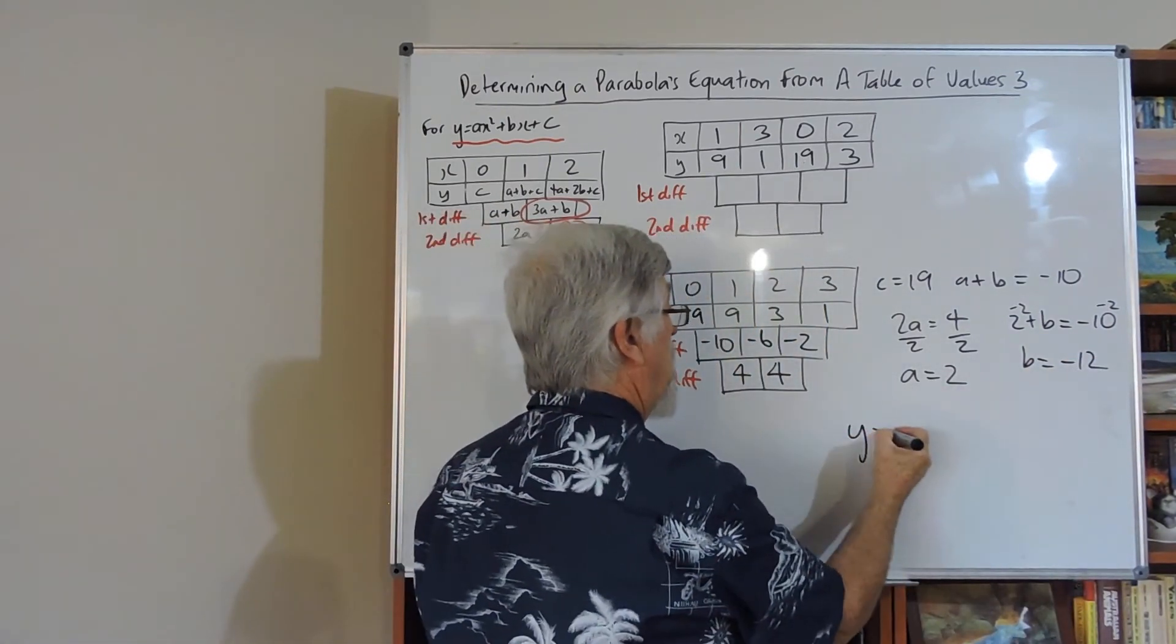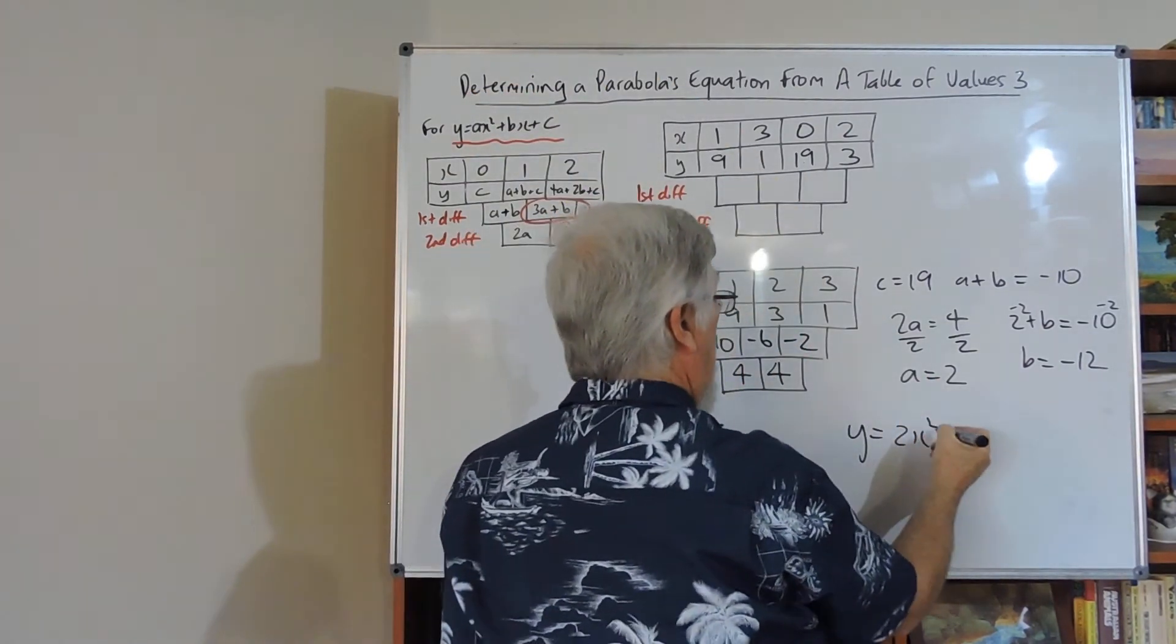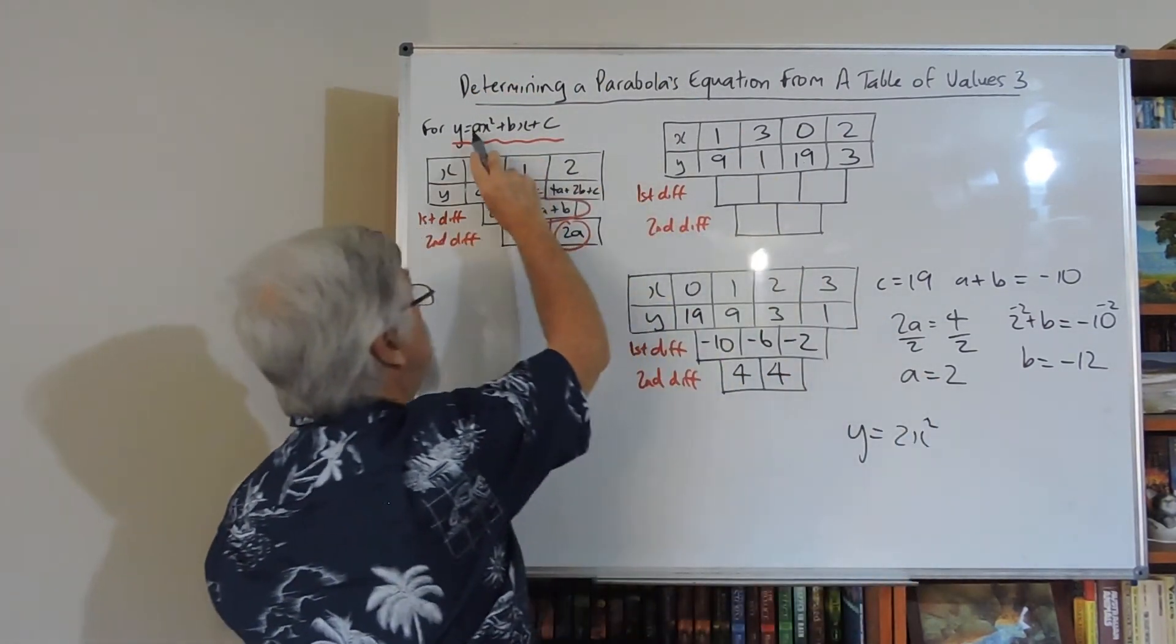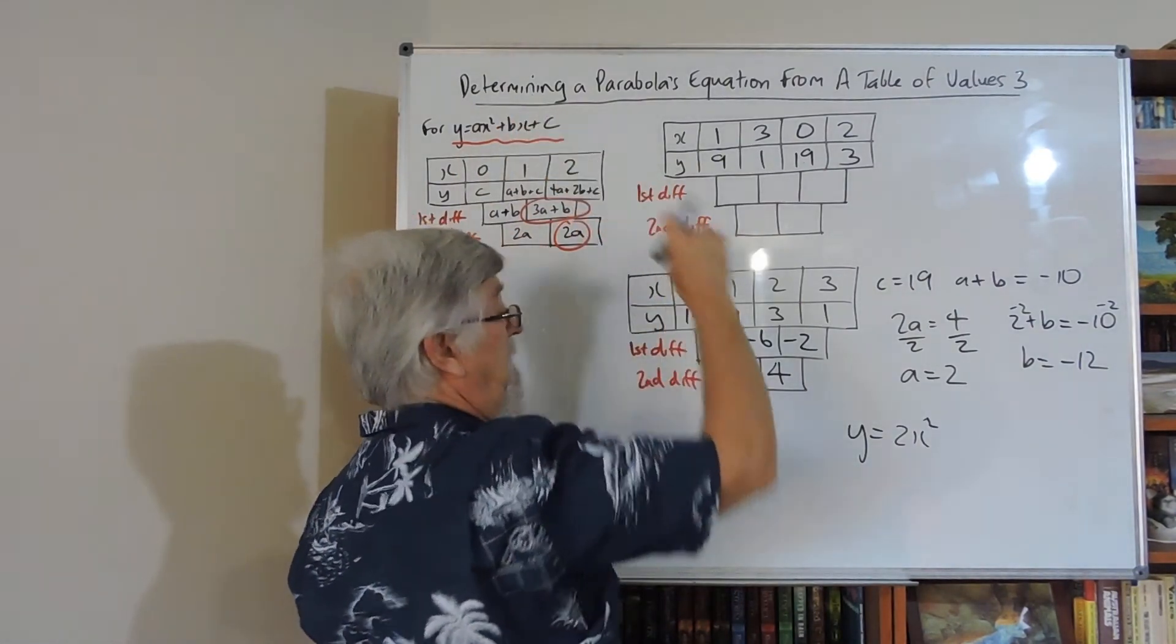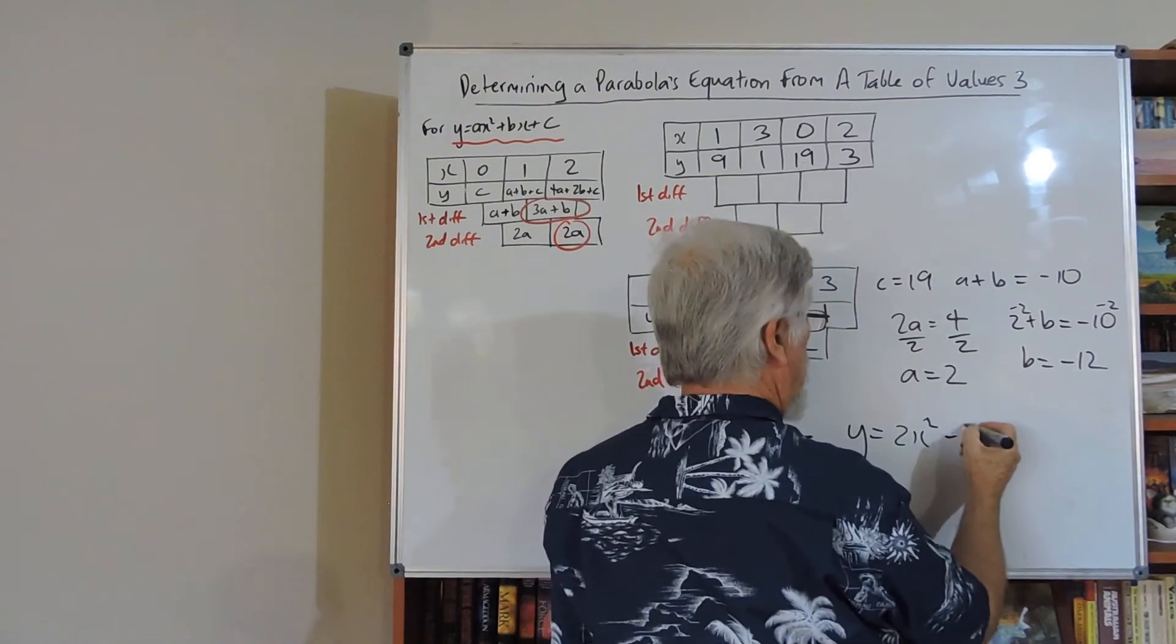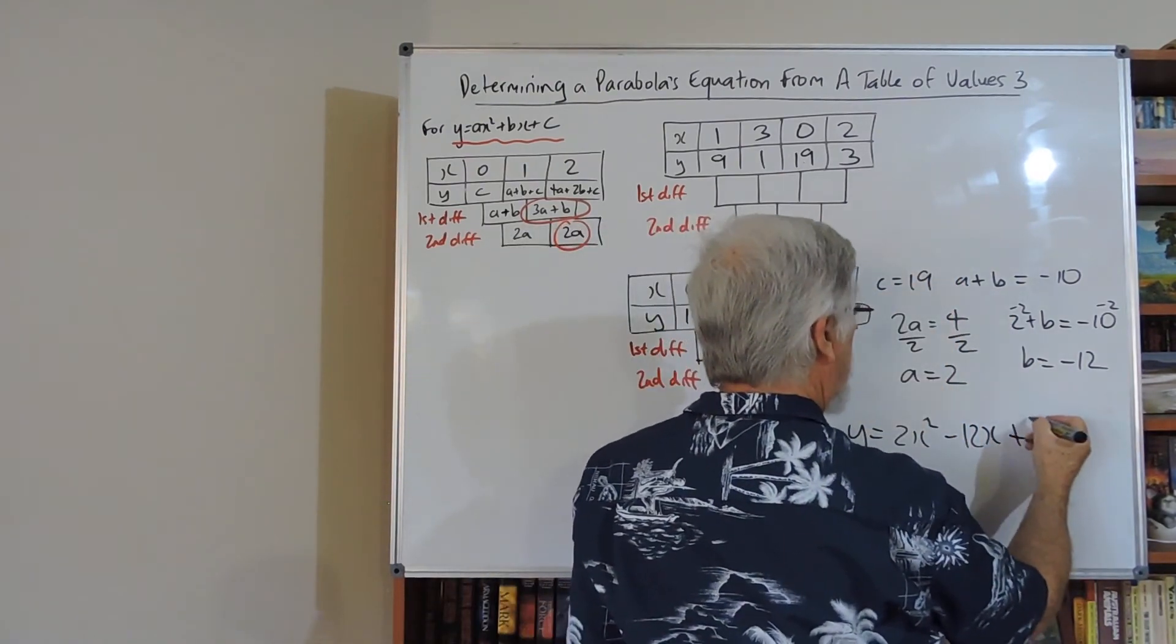So what's my parabola? It's 2x squared. So the A goes in front of the x squared. It's a coefficient of the x squared. The B goes in front of the x. It's a coefficient of the x, so that's minus 12x. And the C is a constant, so that's plus 19.